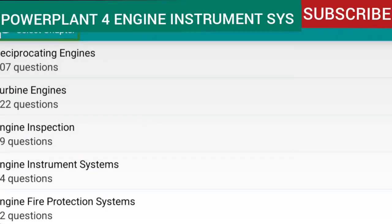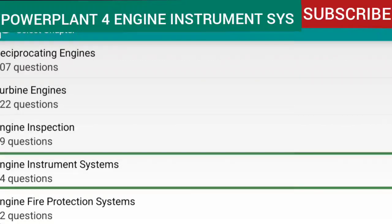Hey everybody, thank you so much for tuning in and watching this video. This video is a power plant study guide to help you pass your final test so that you can get your A&P and start working in the aviation industry. I'm about to do engine instrument systems — it has 54 questions. If you feel I'm going too fast, pause; too slow, fast forward. Don't forget to like and subscribe.